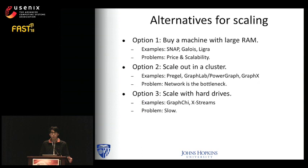As mentioned, real-world graphs have seemingly random vertex connections. When we partition a graph across a network, all communication between vertices needs to go through the network. So usually in distributed graph engines, the network is the bottleneck.